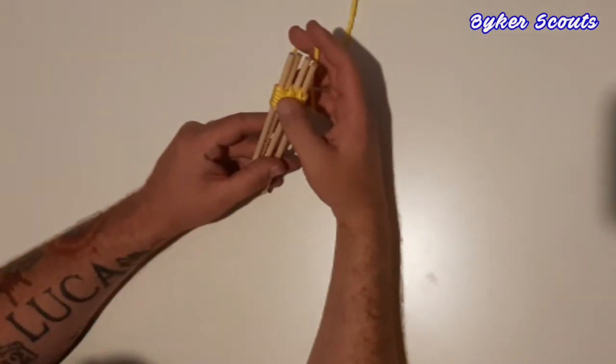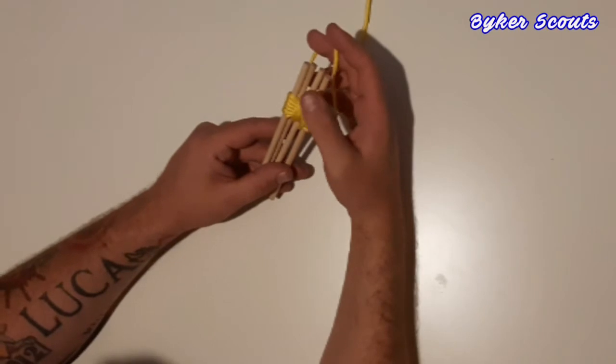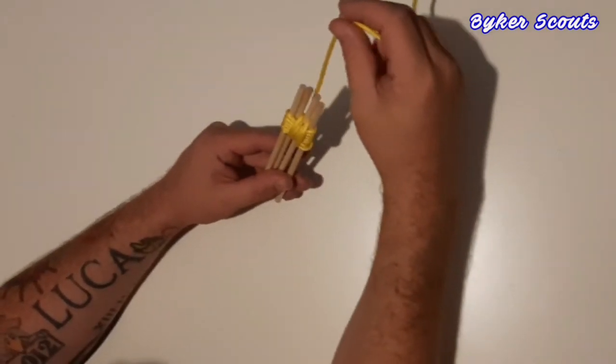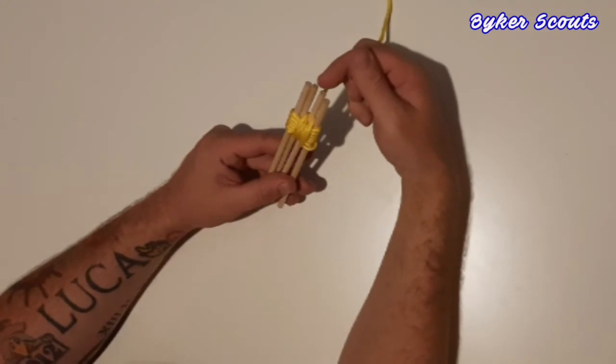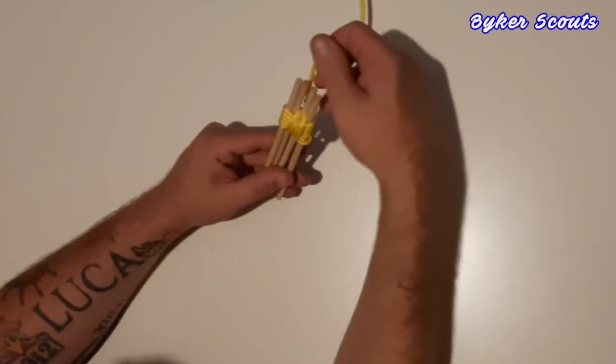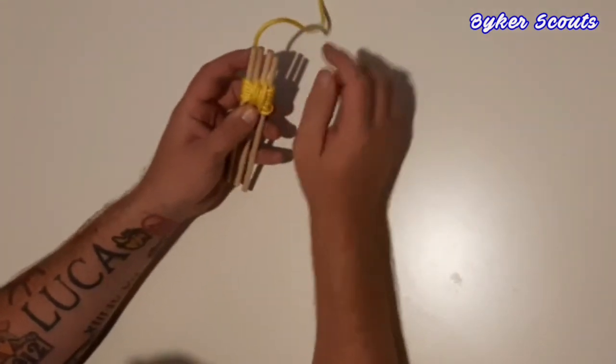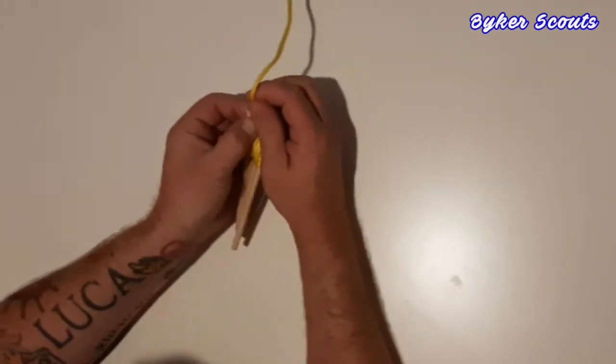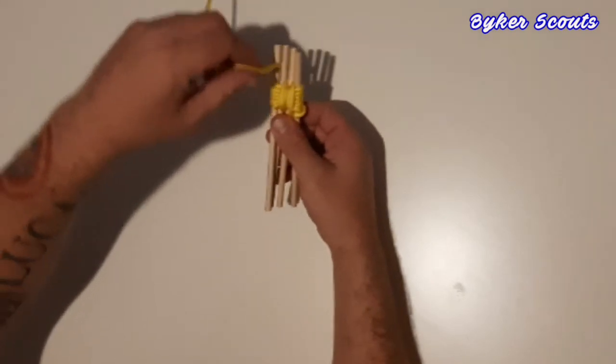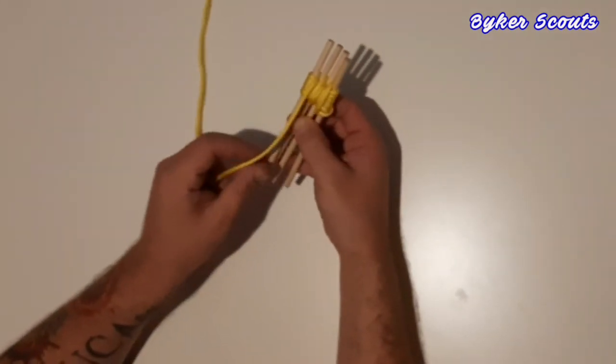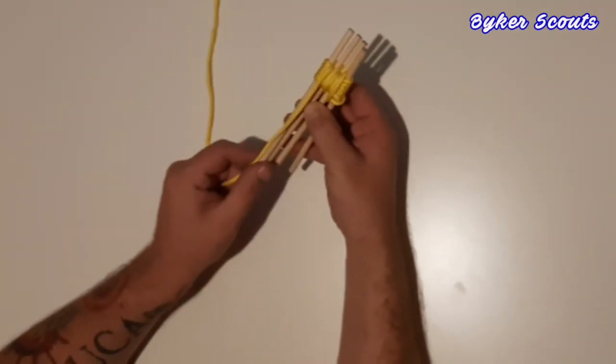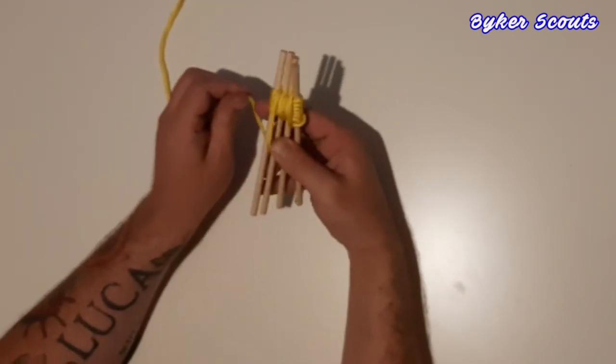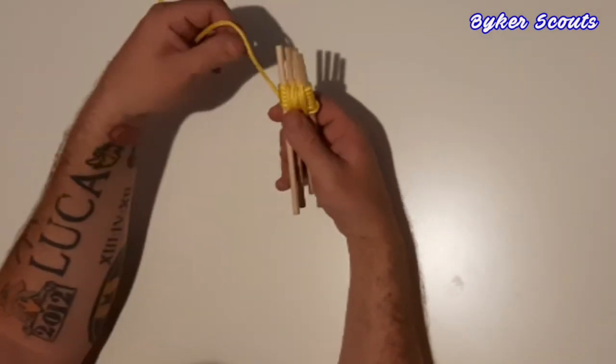Once you've done that over twice, we're going to do exactly the same for the third and fourth dowel. So we're going to bring our string or paracord around the back of the third dowel and go down in between the third and fourth dowel, back up, and we're going to do that twice.